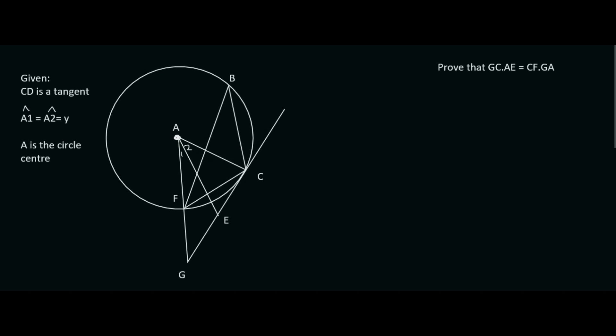I would just like to draw your attention to some important things about this question before we start. They tell us that CD is a tangent, angle A1 is equal to angle A2, both of which can be called Y, and then A is the center of the circle.